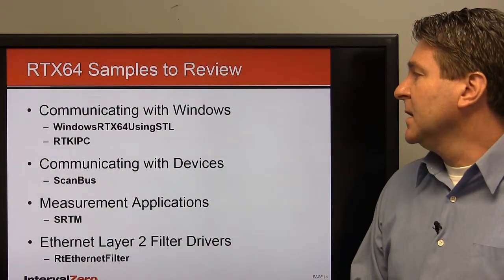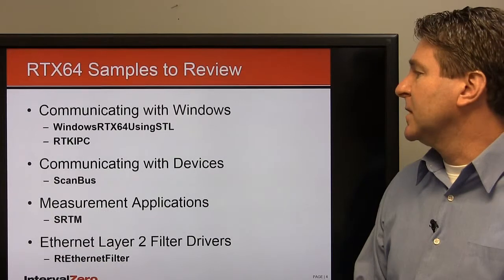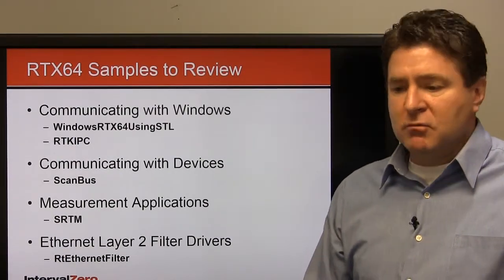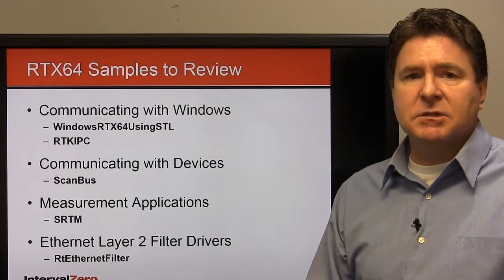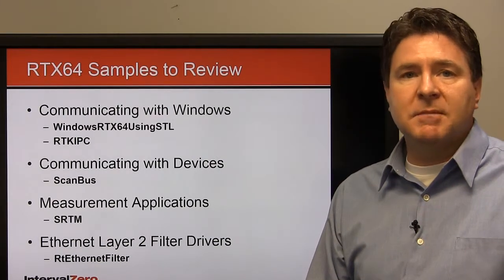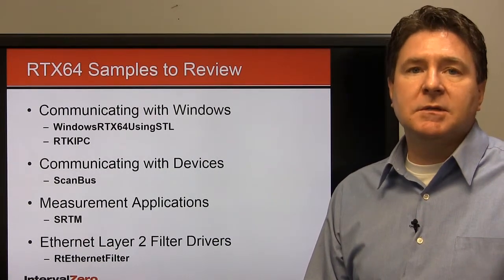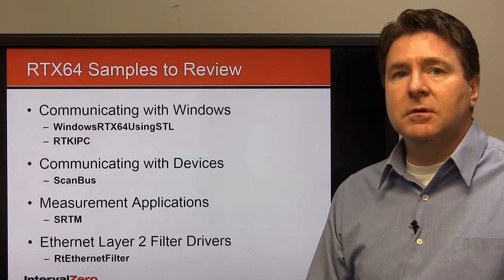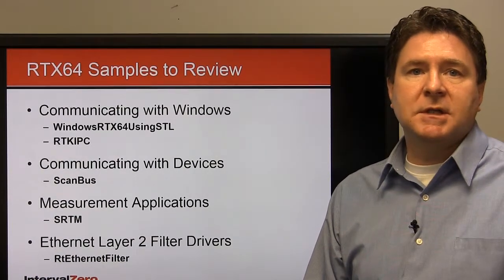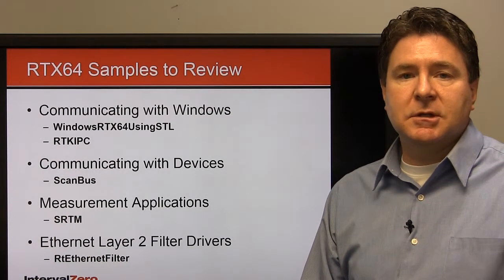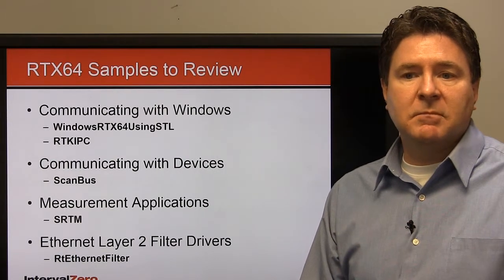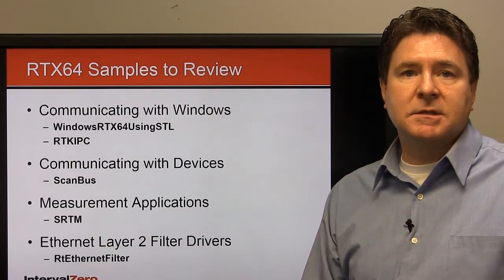The samples we're going to cover today fall into a few categories. The first one is communicating with Windows. When you have a real-time process, it's going to probably need to pass data to a non-real-time process, either for a GUI or a database, and it may have to go two ways. We have two samples: the Windows RTX 64 using STL demonstrates that, as well as the RTK IPC. The RTK is actually a Windows kernel program talking and signaling a real-time process.